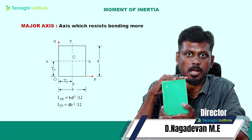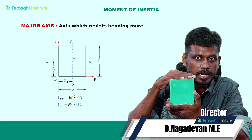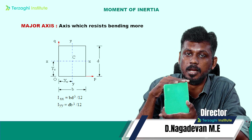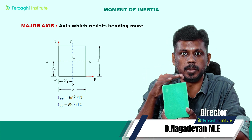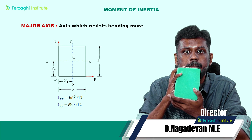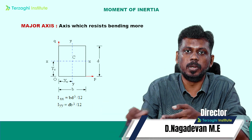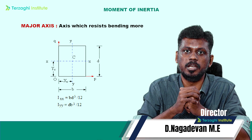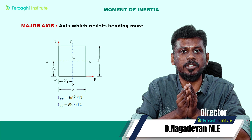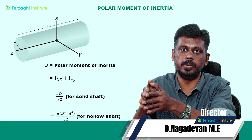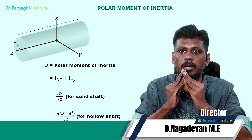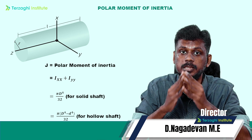BD³ by 12 is for the major axis. For the minor axis it is DB³ by 12. If you look at polar moment of inertia, it is IXX plus IYY. In torsion, we look at the circular shape. For a circular section, IXX equals πD⁴ by 64, and IXX equals IYY.